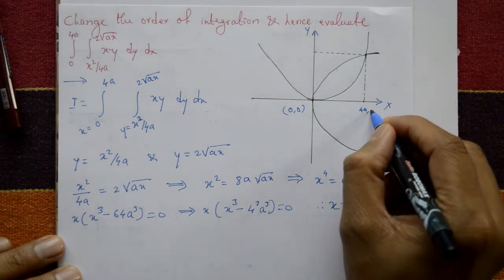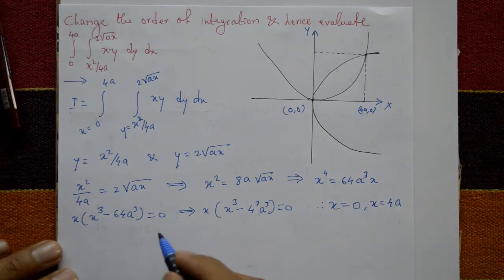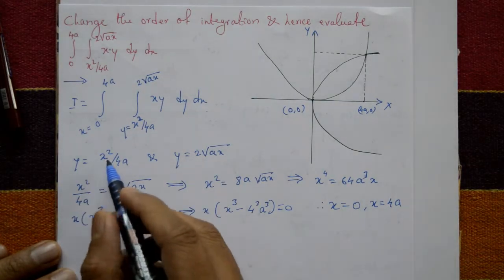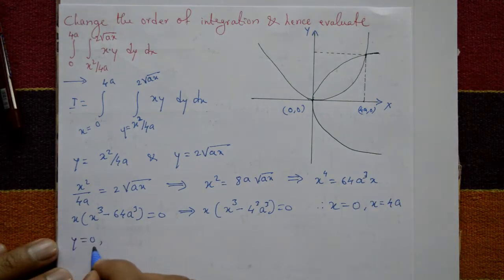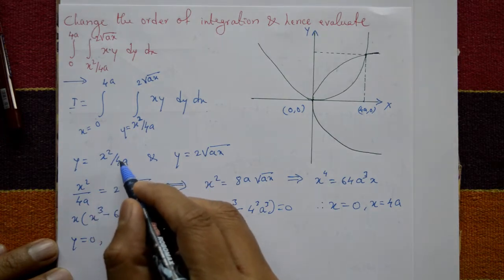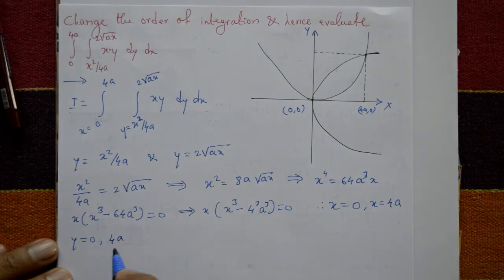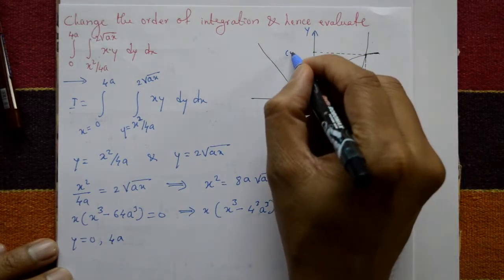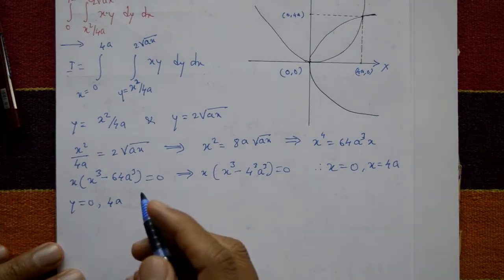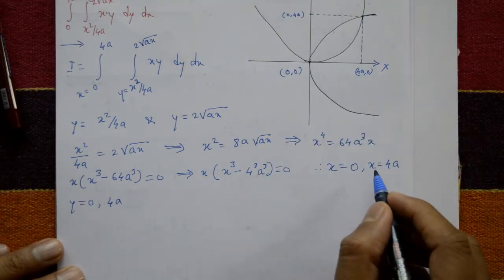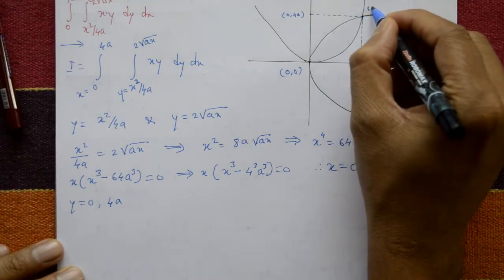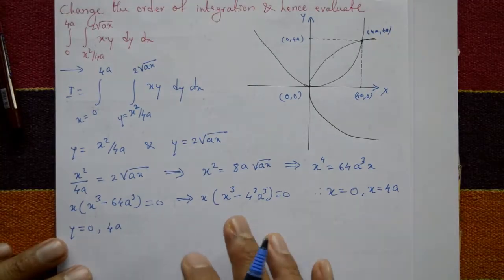The intersection points are (0, 0) and (4a, 4a). When x equals 0, y is also 0. When x equals 4a, substituting into y equals x squared by 4a gives 16a squared divided by 4a, which equals 4a. So the two intersection points are (0, 0) and (4a, 4a).